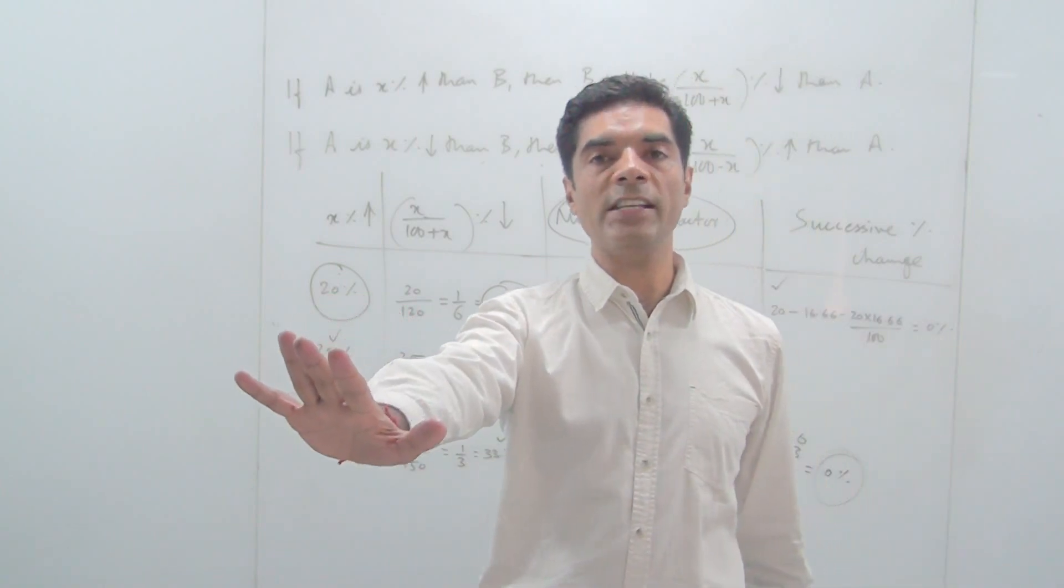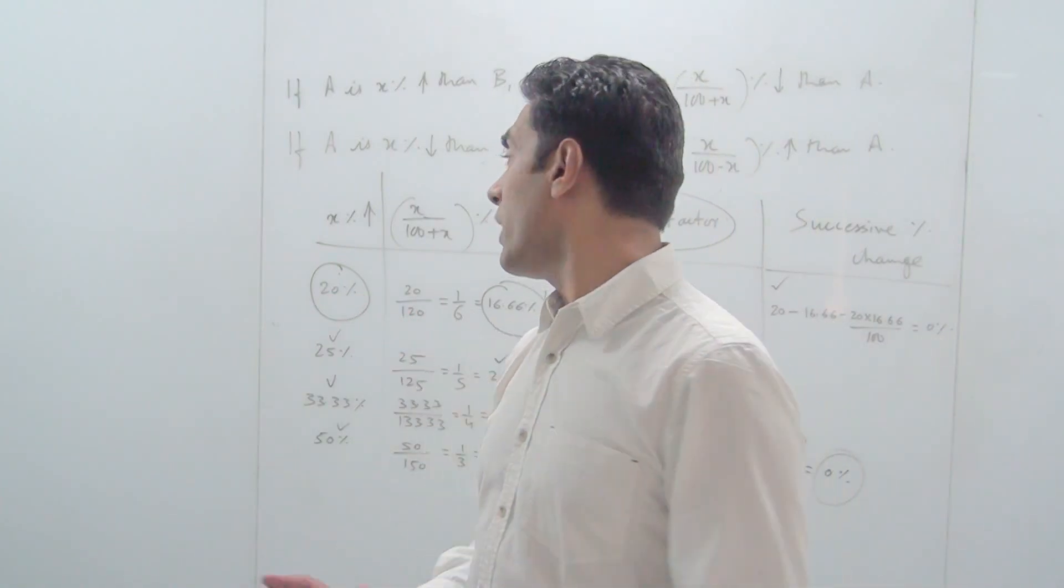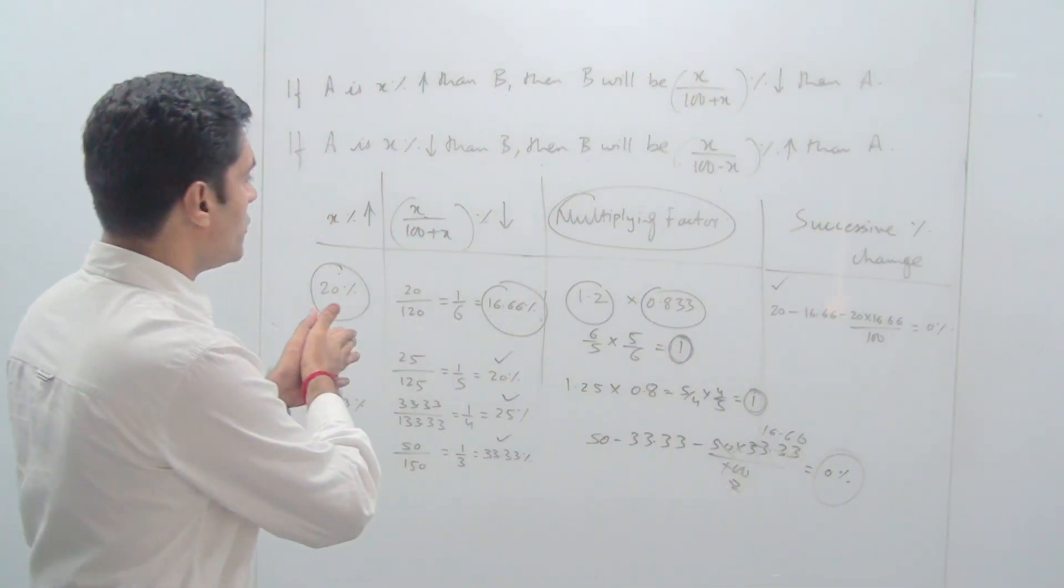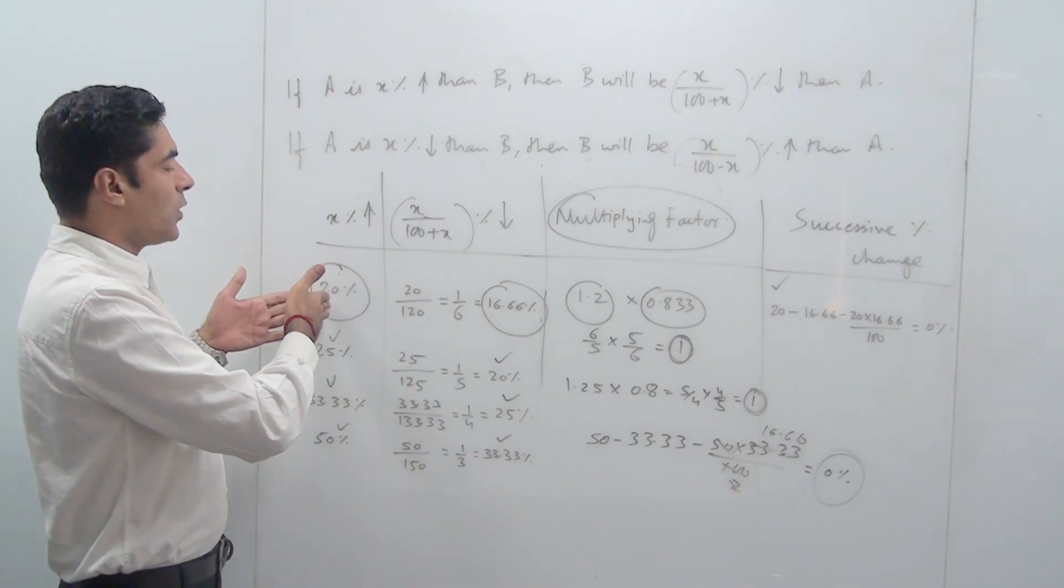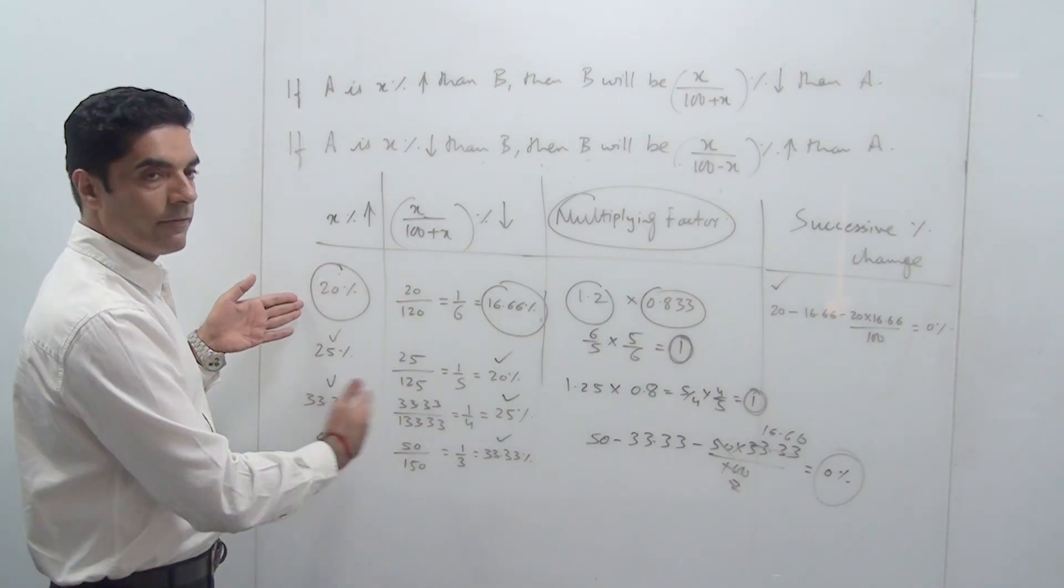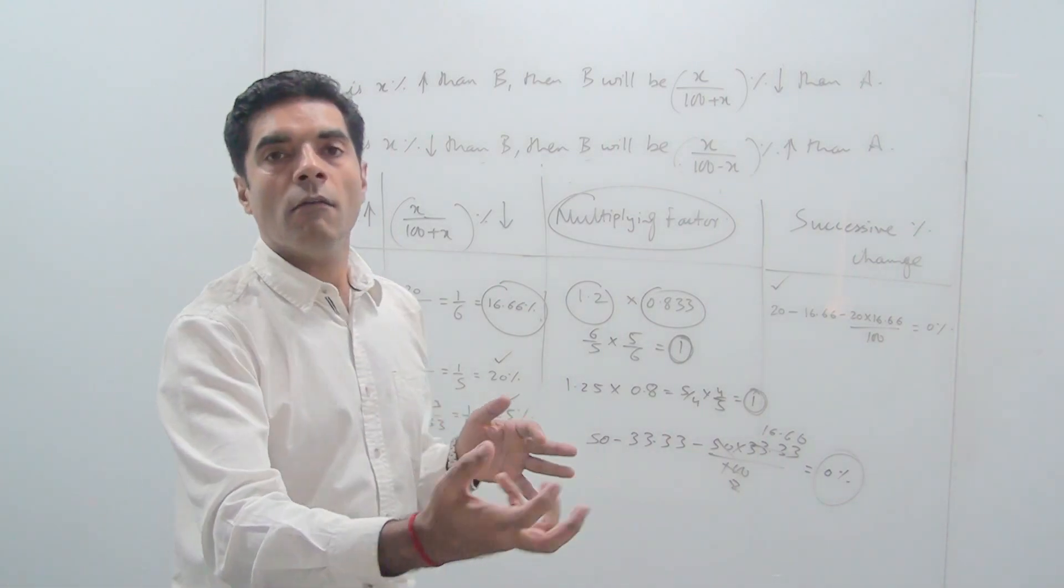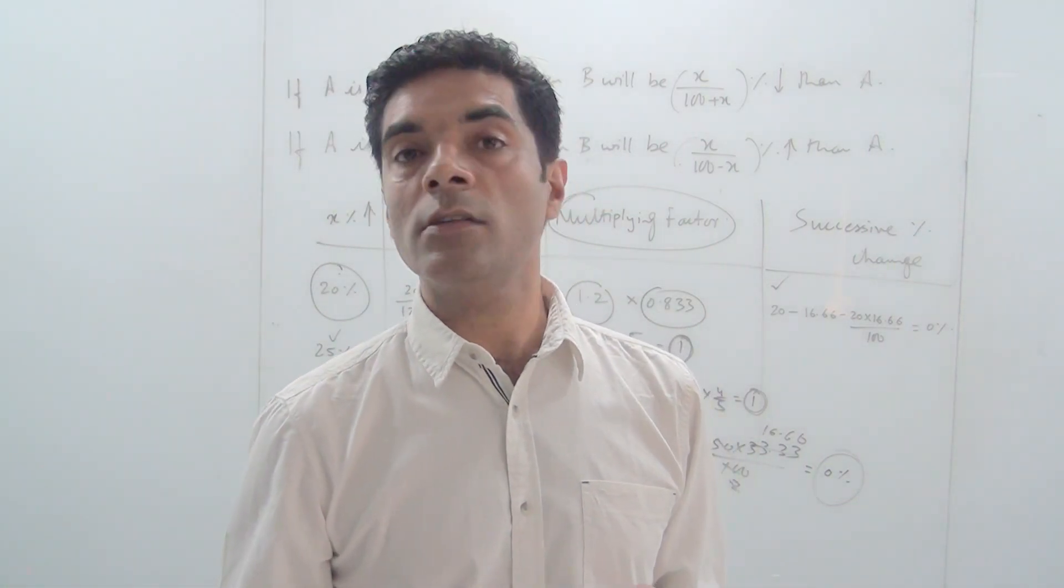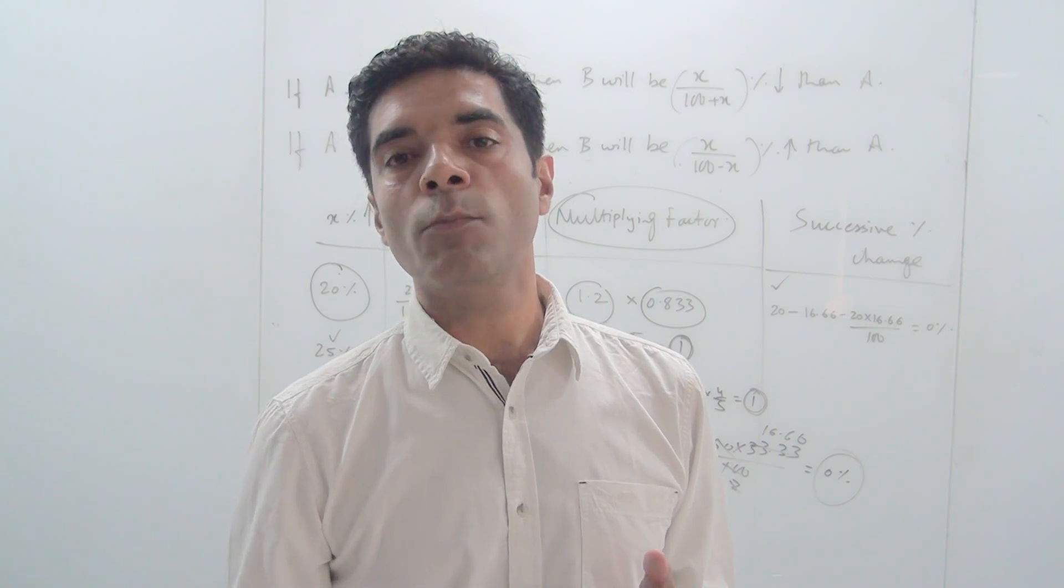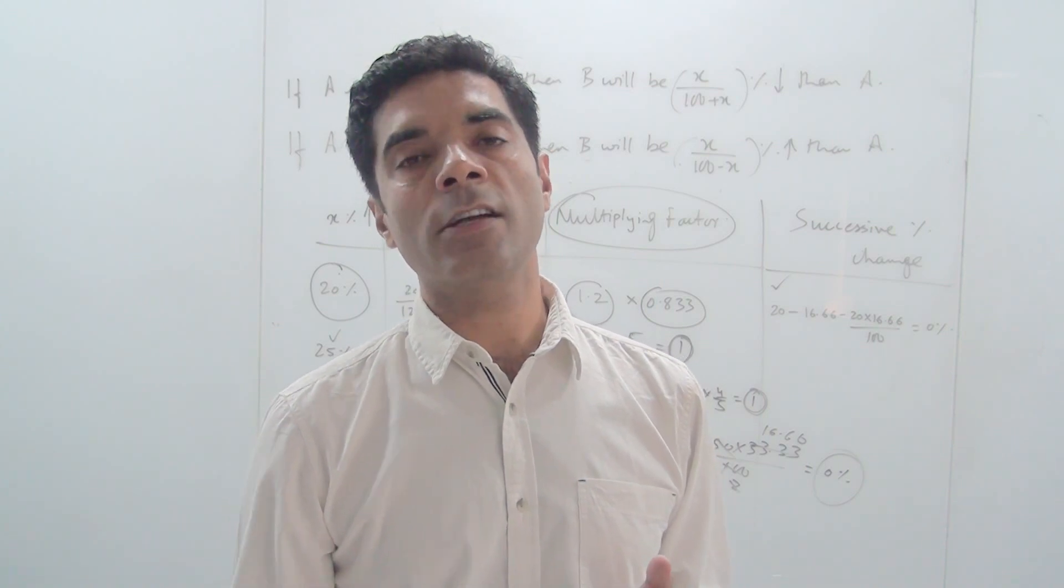Now my sincere advice would be, I would like you people to remember basically the compensating factor for 20, 25, 33, and 50. And you will go a long way because the application is going to be there in solving questions for time-speed, time and work, profit-loss-discount, simple interest and compound interest.